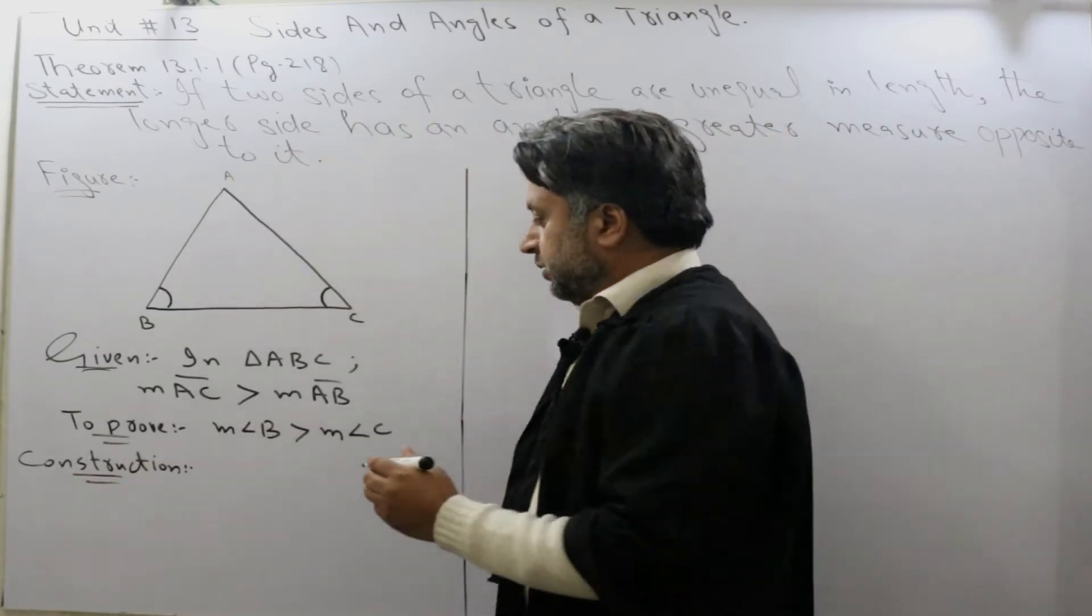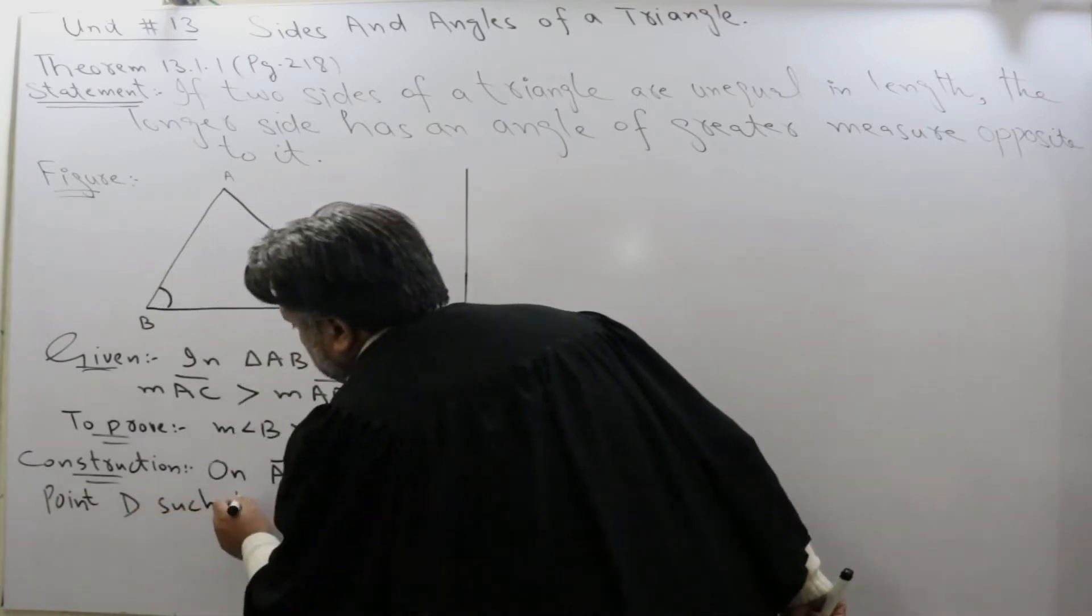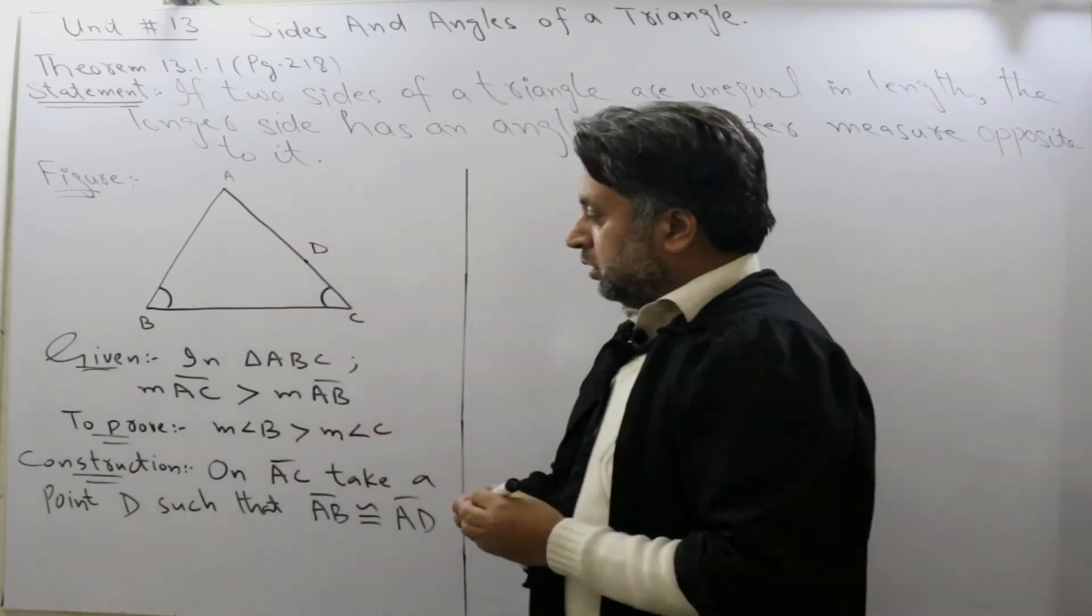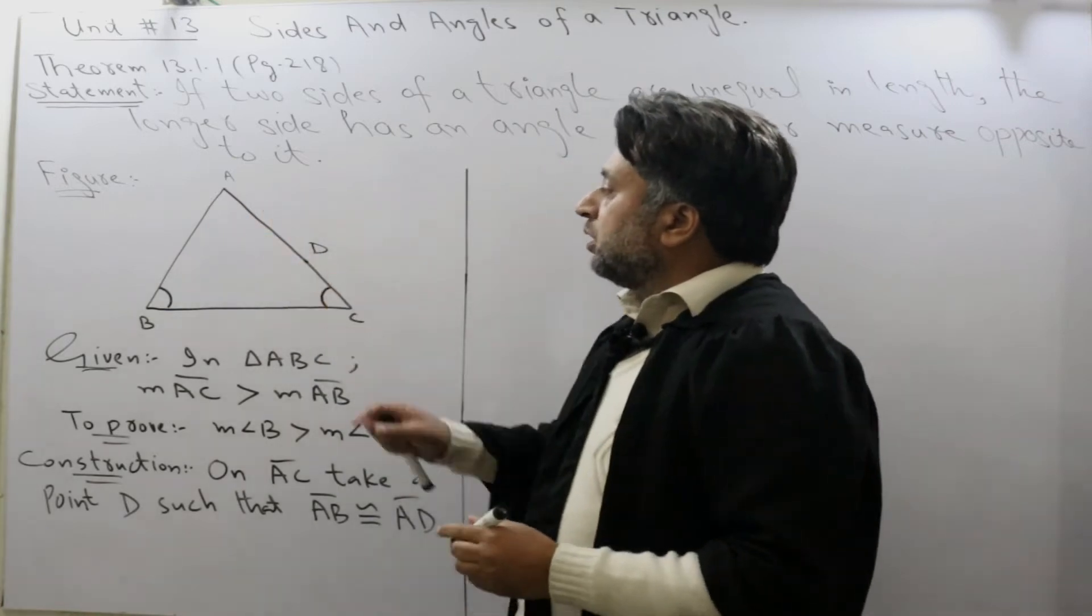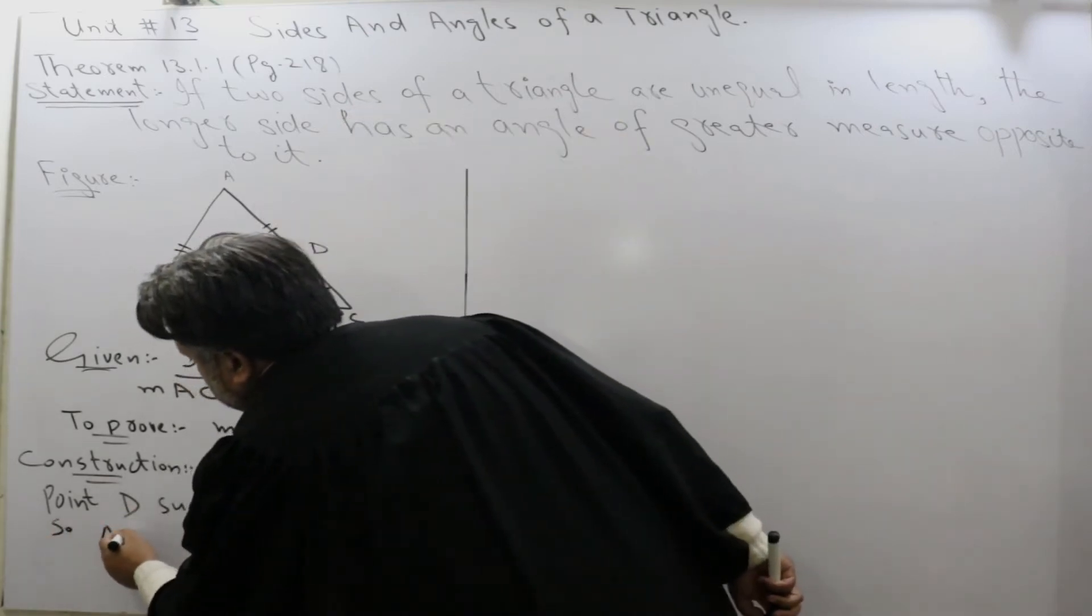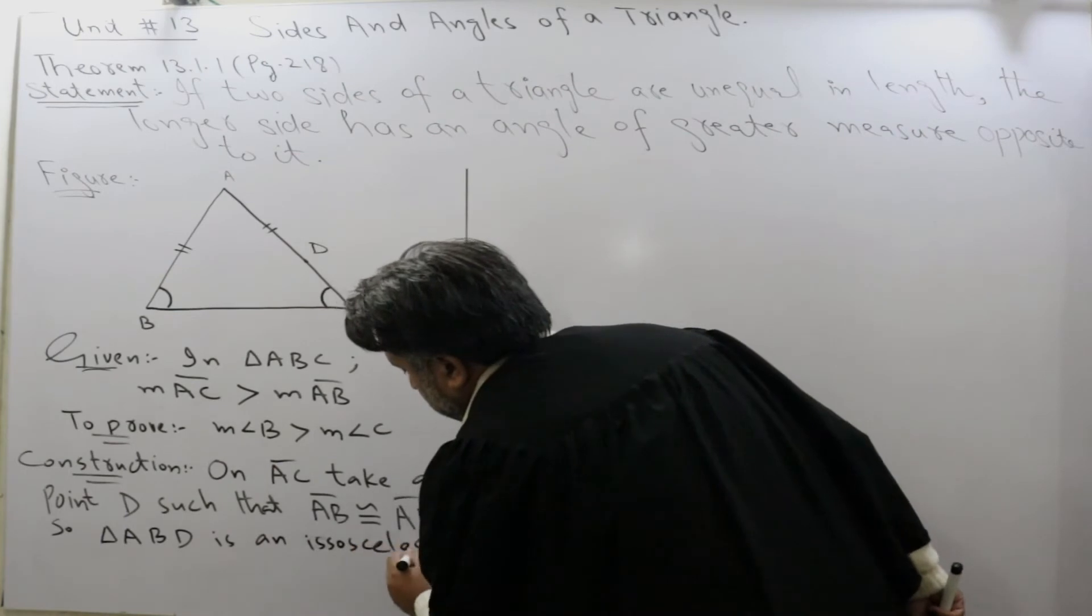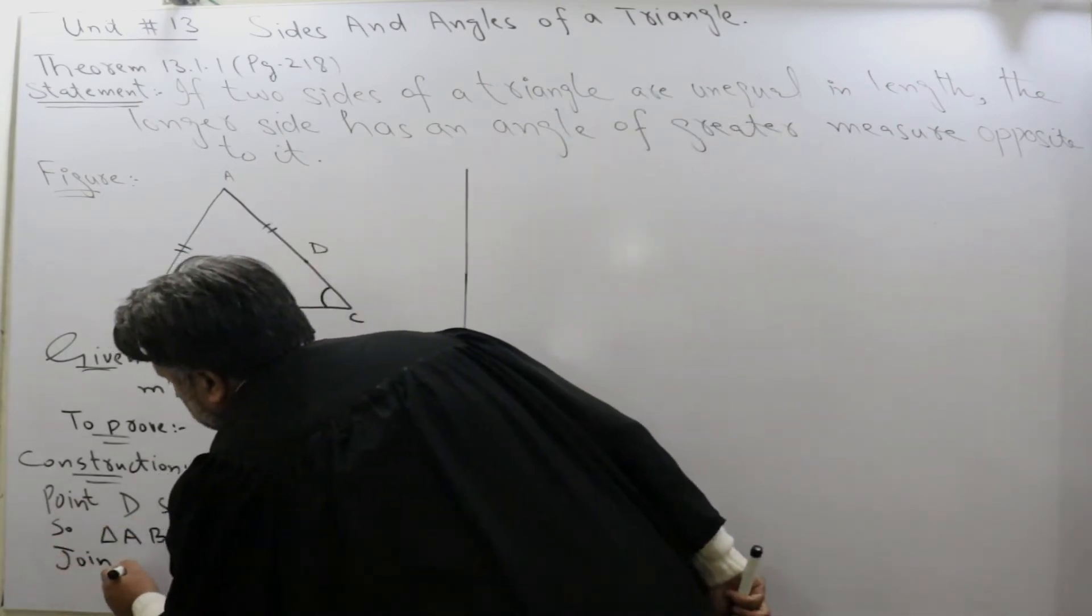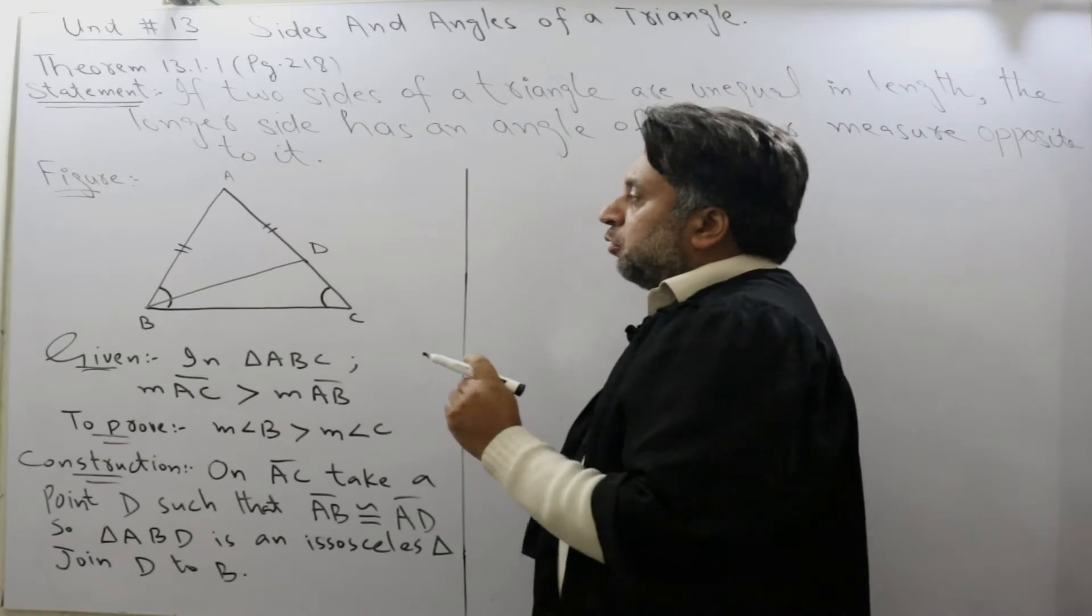On AC, take a point D. In construction on AC, take a point D such that AB is congruent to AD. This side is congruent to this side. Next, join D to B with a dotted line.